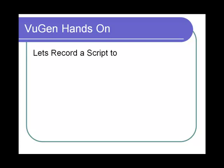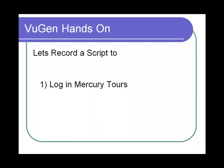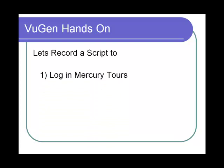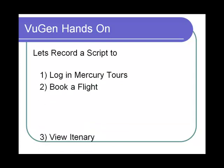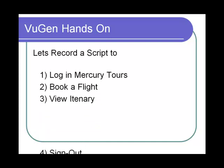Let's record a script in VuGen. We will login to Mercury Tours, book a flight, view the itinerary, and sign off from the application.